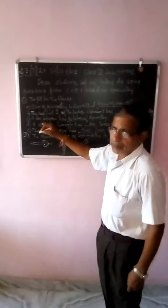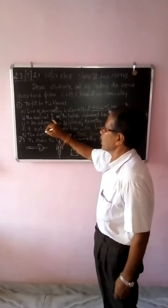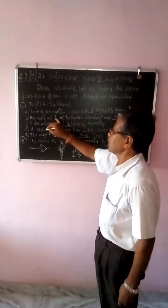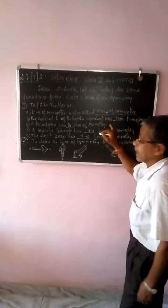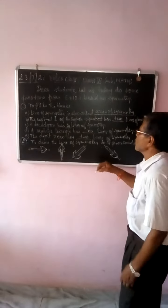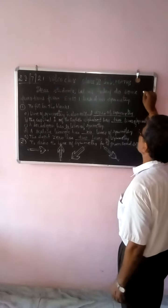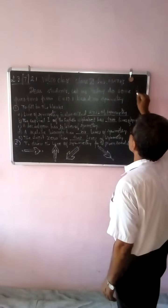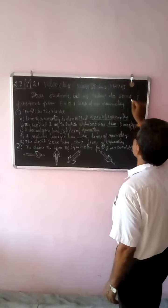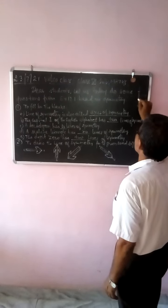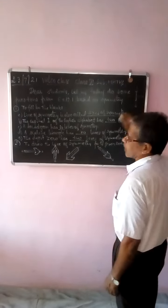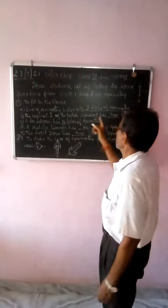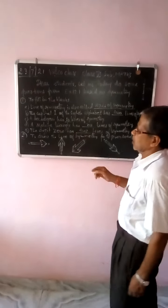Then go for part B. The capital letter I of the English alphabet has how many lines of symmetry? It has two lines of symmetry — one will be like this and another will be like this. So the capital I of the English alphabet has two lines of symmetry.